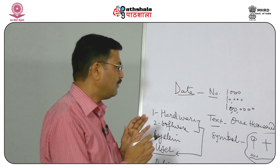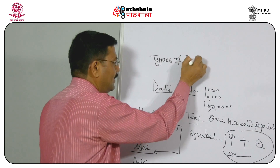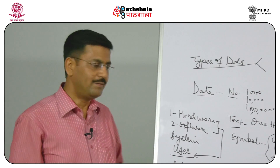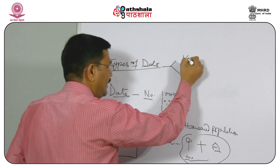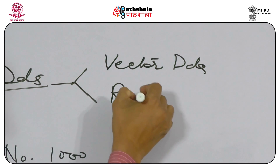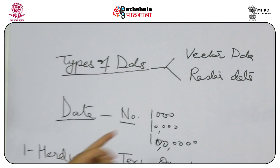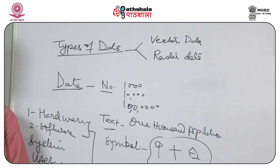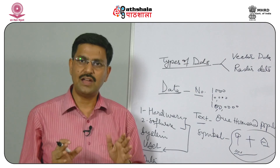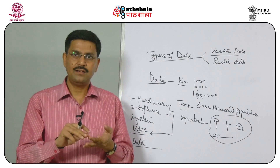Now we need to know what are different types of data, especially in a GIS domain. In broad categories, there are two types of data: one is called vector data and the second is raster data. These are two broad categories of spatial data which we normally and commonly use in GIS software. Vector data is nothing but a point, line, or area.